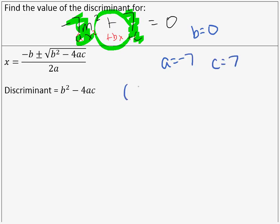So we're going to plug those values in. We're going to get something for b squared minus 4, something for a, and something for c. We said that b was 0, a was negative 7, and c was 7.